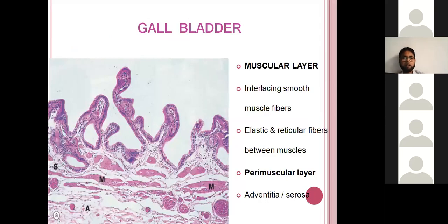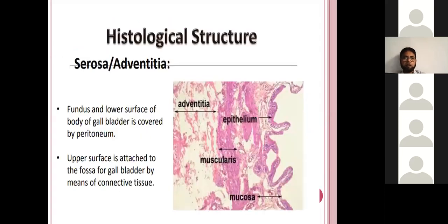These are the features of the gallbladder: both submucosa and muscularis mucosae are absent. The outer covering is serosa or adventitia. We know that most of the gallbladder is covered by peritoneum, making it serosa, and where it is not covered by peritoneum, it is adventitia.